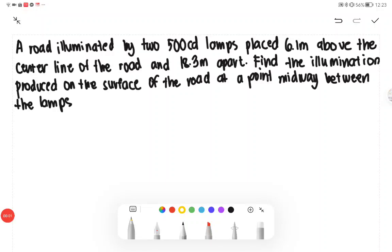Our road is illuminated by two 500 CD lamps placed each 6.1 above the center of the line of the road and then 18.3 meters apart. We have to find the illumination produced on the surface of the road at the point midway between the lamps.